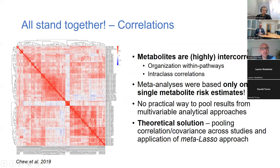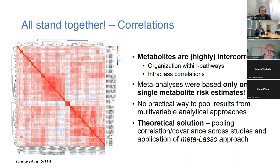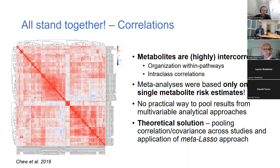We could not capture intercorrelations between metabolites because there is no good method to pool intercorrelations from original studies, and covariance matrices are not consistently reported. In theory, a method called meta-LASSO, created for genetic meta-analysis, could be used here. However, manually retyping an entire correlation matrix between 1,000 metabolites from each study is not feasible at such a scale unless this information is automatically available.